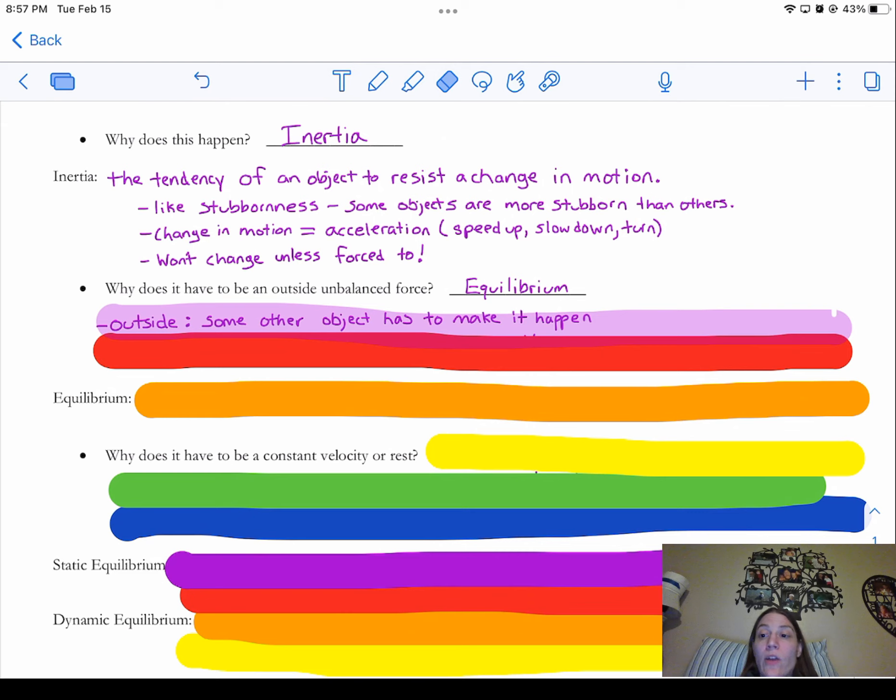Now, when we mean an outside force, that means something else other than the object or something that's part of the object has to do the changing of what it's happening or what it's doing. So it has to be an outside force or you have to be interacting with another object. So you might change your own motion, but you have to do it by interacting with something else like the floor or the wall.